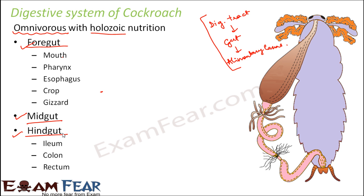The foregut is on the anterior end and includes the mouth, pharynx, esophagus, crop, and gizzard. Starting from the mouth, then the pharynx, followed by the tube-like esophagus, then the hollow crop for food storage, and finally the gizzard. Everything up to and including the gizzard constitutes the foregut.